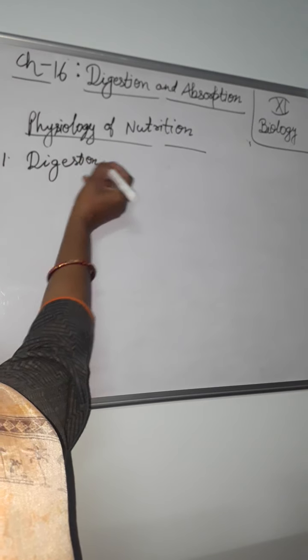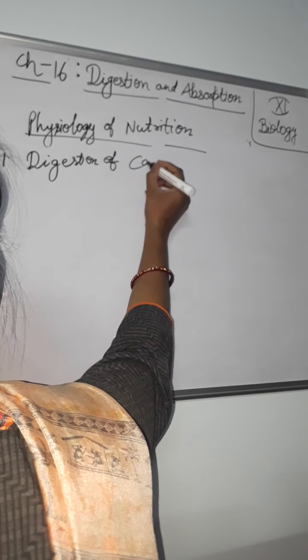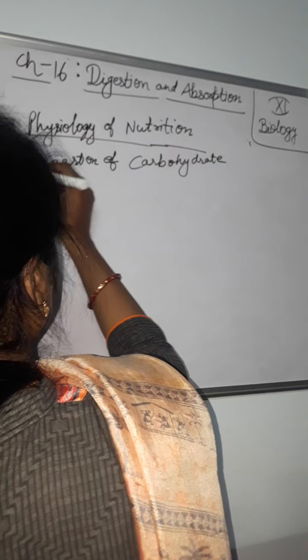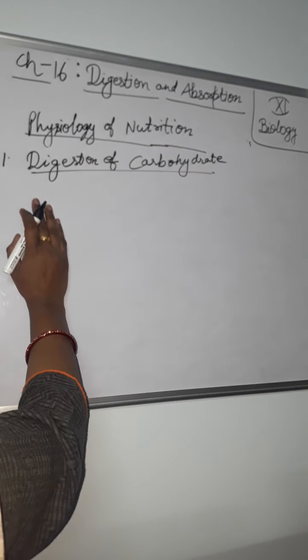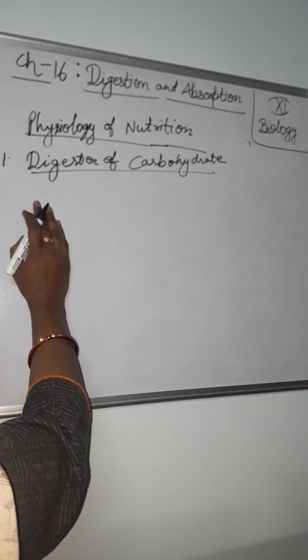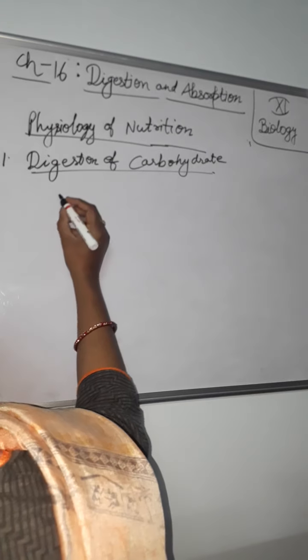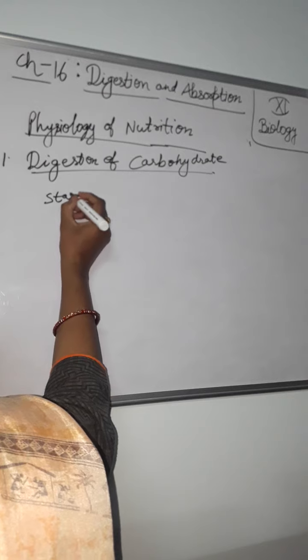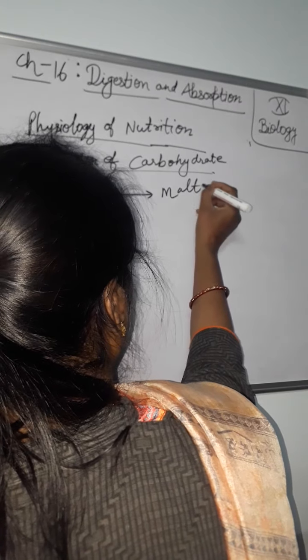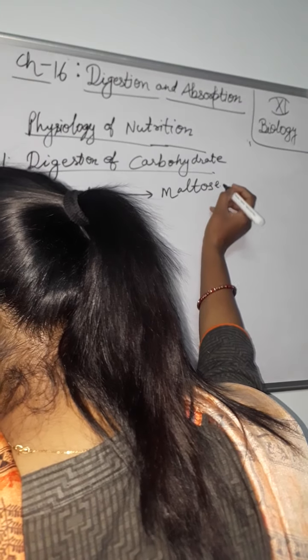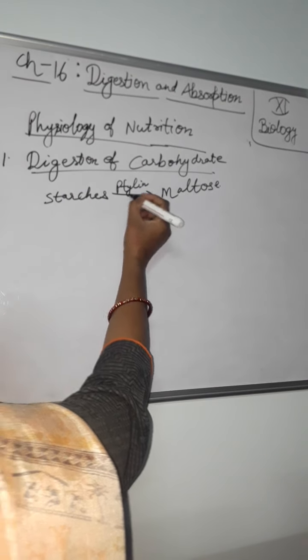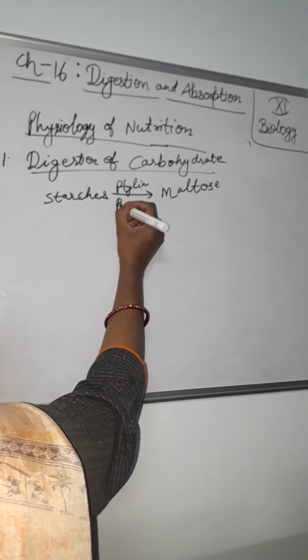Digestion of carbohydrate - as you know starches, that is polysaccharides, breakdown into maltose and maltose breaks down into glucose. See here, starches break down into maltose with the help of ptyalin enzyme, and ptyalin, that is salivary amylase and pancreatic amylase.